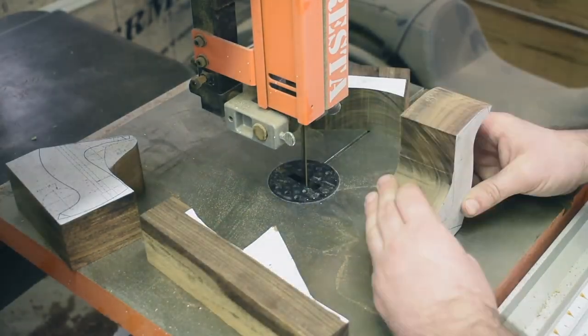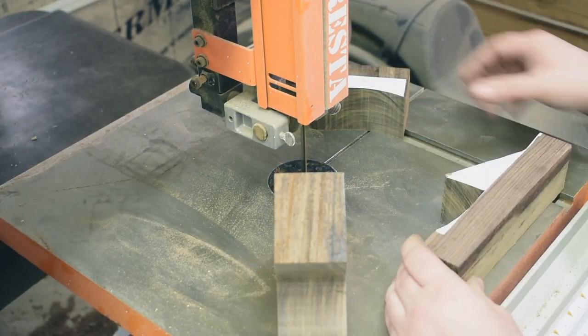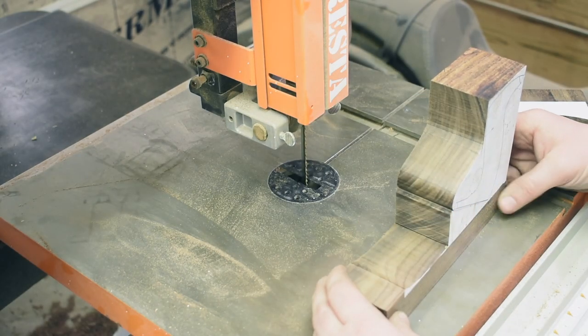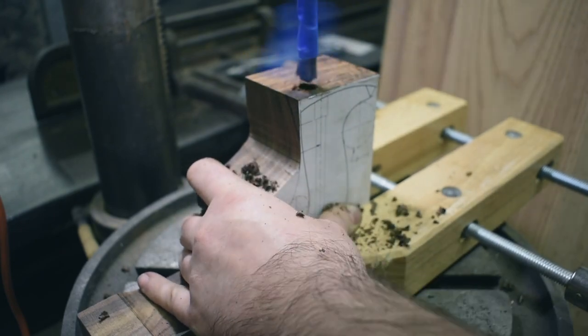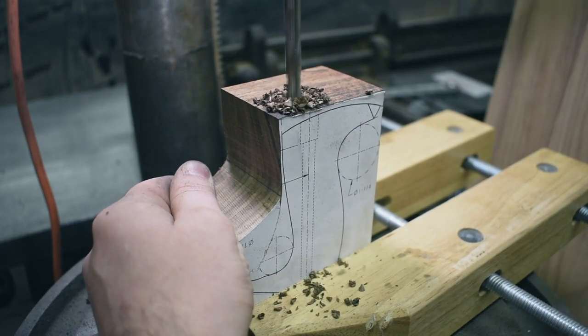I started by roughing out the handles at the bandsaw but I got a little carried away and realized that I should have drilled my hole sooner. Fortunately the offcuts weren't mangled yet so I was able to piece it back together and drill the main hole through the handle.